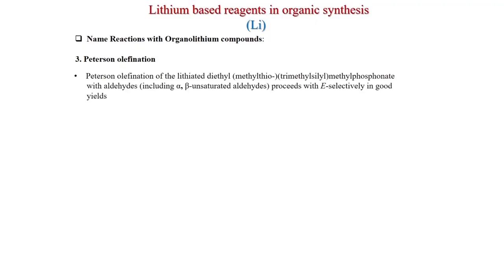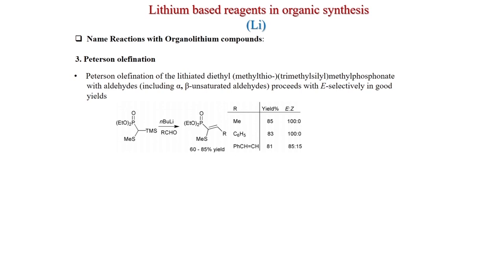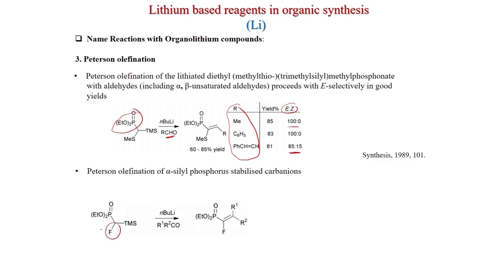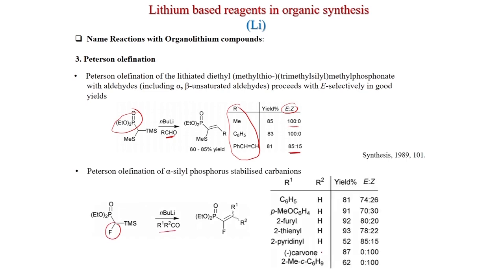More Peterson olefination examples: lithiated dimethyl methylphosphonate reacts with aldehydes including α,β-unsaturated aldehydes with E-selectivity in good yields. When R = methyl, 100% E; R = phenyl, 100% E; R = cinnamyl, 85% E. With fluorine-containing substrates and different ketones, the E:Z ratio varies; for cyclohexanone with 2-methylcyclohexanone, the Z compound is the major product.